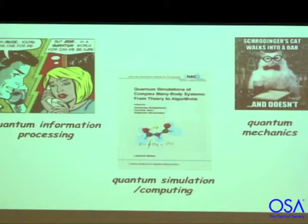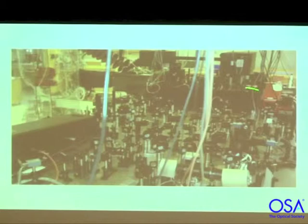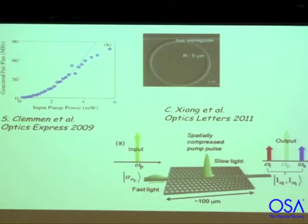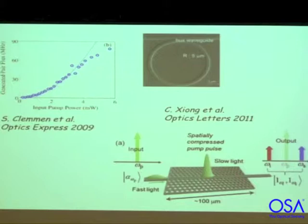Usually one generates entangled photons with lab equipment featuring many beam splitters and many nonlinear crystals — especially if you want to make three or four pairs. You get a lot of optics that all has to be stabilized and made to work well together, requiring vast armies of graduate students and therefore very expensive. So there's been an effort over the last half dozen years to do these things on a chip, in the same way that electronics was advanced by putting it on a chip — the idea being that quantum photonics will be advanced by integration.